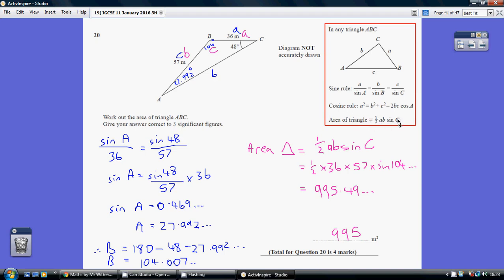I'm now going to re-label my triangle so I've got my angle being capital C. So this is now my capital C. That can remain as being little a, but this is my little b.